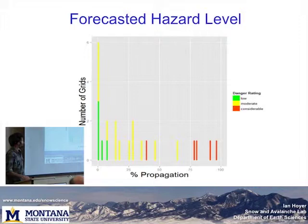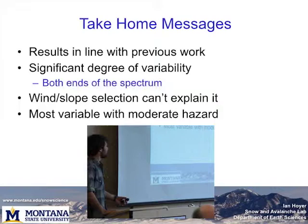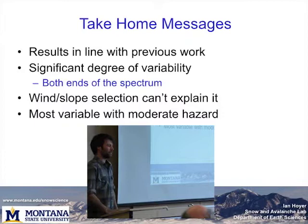Breaking this down: oranges are considerable days, yellow are moderate, and green are low days. The days when the danger rating was forecasted higher, you tend to have more propagation, and those moderate days span a bigger gap than either considerable or low.